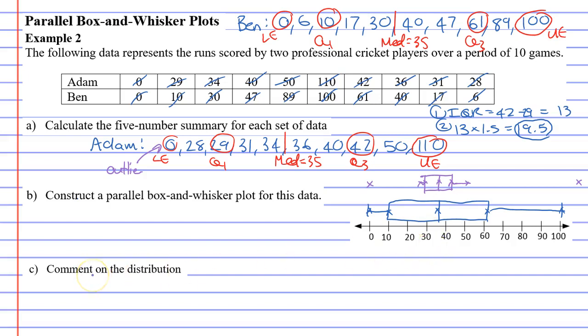Okay. Now we're going to finish with question C, which wants us to comment on the distribution. Now, when we look at both of these, we've got Adam and Ben, actually a better label which one's which for us. Adam's the purple one, and Ben is in blue. When we look at this, we can see that they both have the same central measure. They've both got the same median.